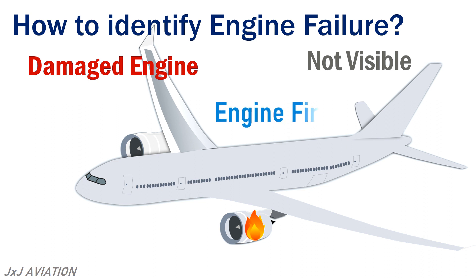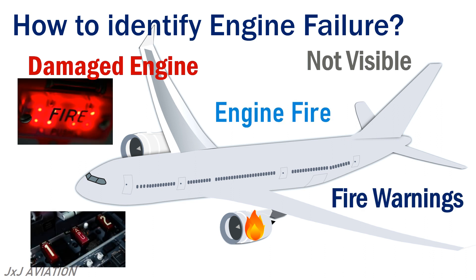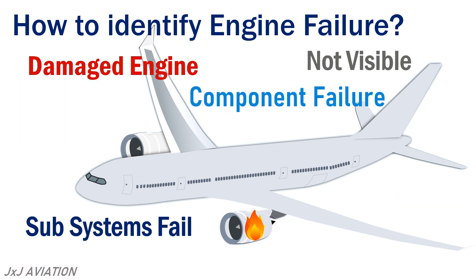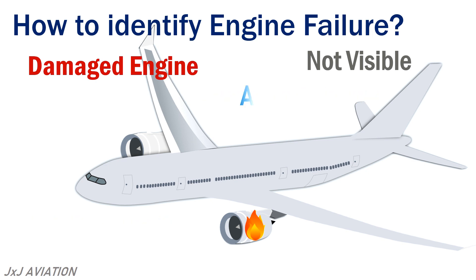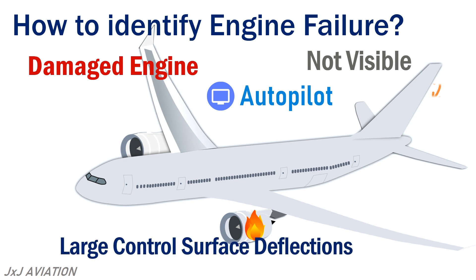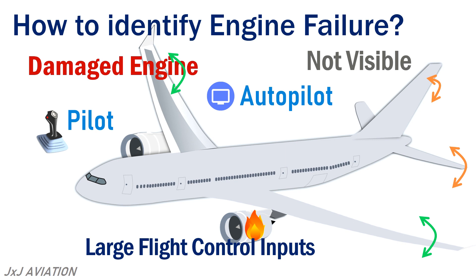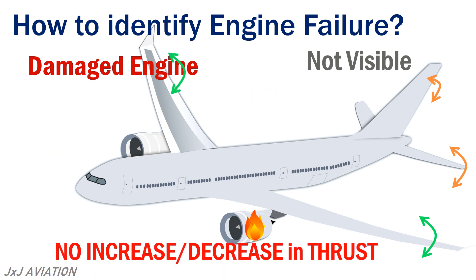In case of an engine fire, a fire warning is triggered. In case of a component failure, other systems associated with the engine will begin to fail. If the autopilot is engaged there may be large control surface deflections to maintain steady flight, or if the autopilot is not engaged the pilots need to give large flight control inputs so that the aircraft continues flying straight and level. There will be no increase or decrease in thrust on that engine, making it easy to identify an engine failure in the cockpit.